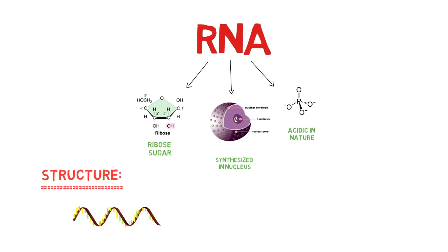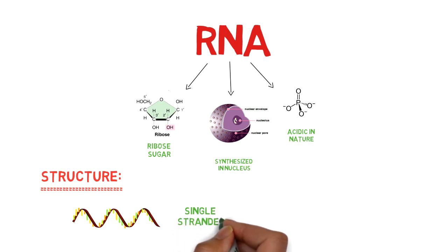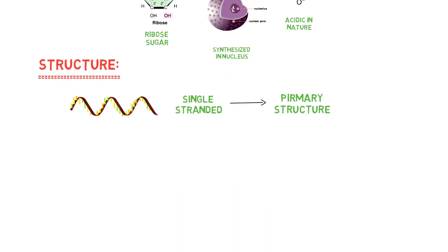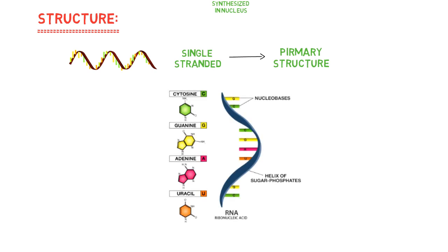Mostly, RNA has single-stranded structures. It is called its primary structure. It has a sugar phosphate chain along which nucleotides are arranged. It has four nucleotide bases: adenine, cytosine, guanine, and uracil.